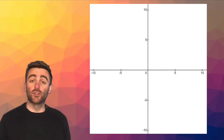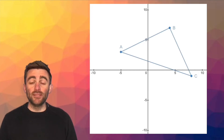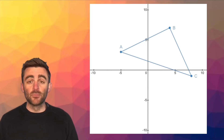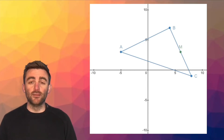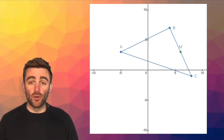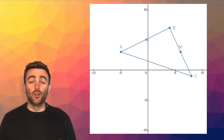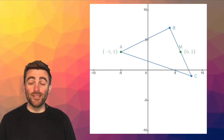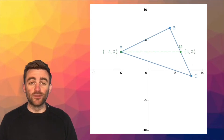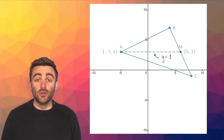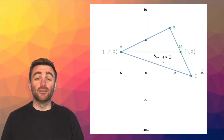Let's consider triangle ABC. The median from A goes to the midpoint of the opposite side, which is BC, so the midpoint we want is point M. Point M and point A already look like they'll form a horizontal line, and if we look at the two coordinates, they share a y coordinate. So the median from A to M is horizontal, and the equation is simply y equals 3.